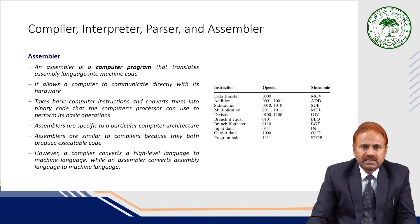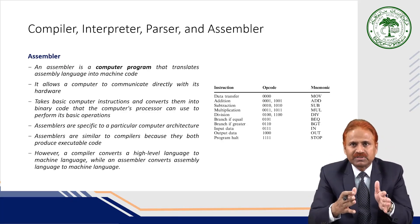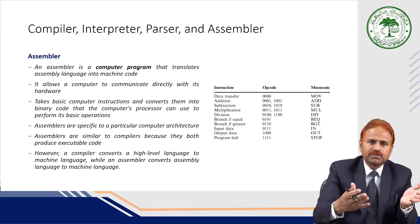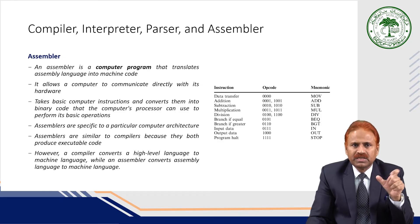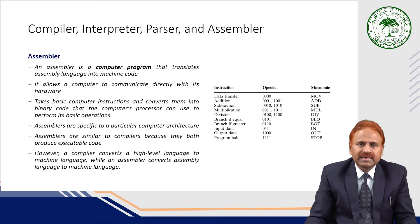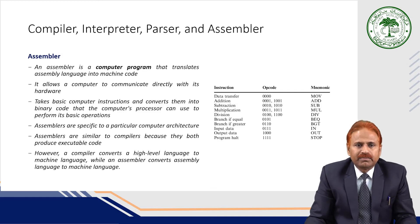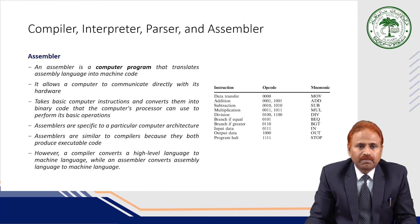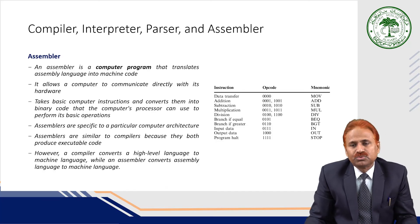An assembler is a computer program that translates assembly language into machine code. While a compiler converts a program written in a high-level language like C, Java, or C++ into equivalent object code, an assembler converts programs written in assembly language into machine code. It allows a computer to communicate directly with its hardware. Assemblers take basic computer instructions and convert them into binary code that the processor can use. Assemblers are specific to a particular computer architecture and are similar to compilers in that both produce executable code — however, a compiler converts high-level language to machine language while an assembler converts assembly language to machine language.